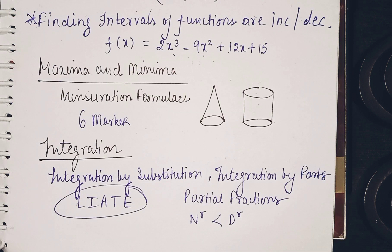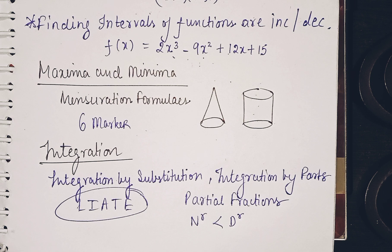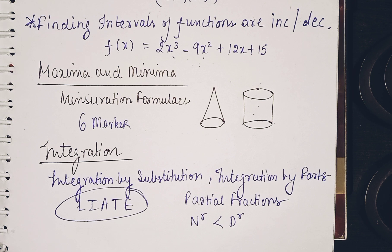Integration is the part most students feel is toughest in Section A, but if you practice a lot it will become easy. Integration by substitution and integration by parts — most questions come from these methods for indefinite integrals. The LIATE rule — Logarithmic, Inverse trigonometric, Algebraic, Trigonometric, Exponential — must be followed whenever two functions are to be integrated. Never apply the product rule of differentiation in integration; students often confuse the two. For example, the integration of cos(x) is sin(x), but the differentiation of cos(x) is −sin(x).